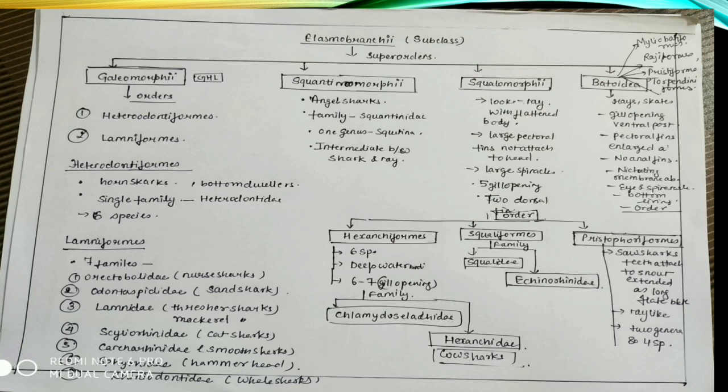And the other one is Rhincodontidae, that is whale shark. These are all the families under Lamniformes. Squantinomorpha are angel sharks, family Squantinidae, one genus Squatina, intermediate between sharks and rays.